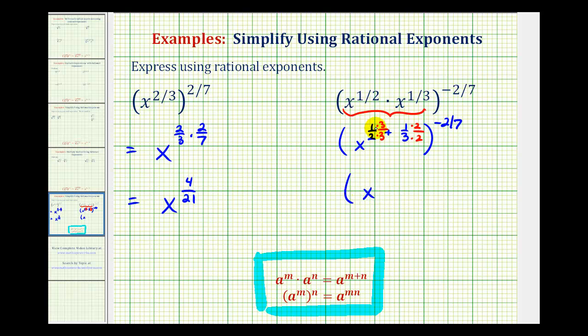So we'll have x raised to the power of, this would be three-sixths plus two-sixths, which would be five-sixths. And this is still raised to the negative two-sevenths power.